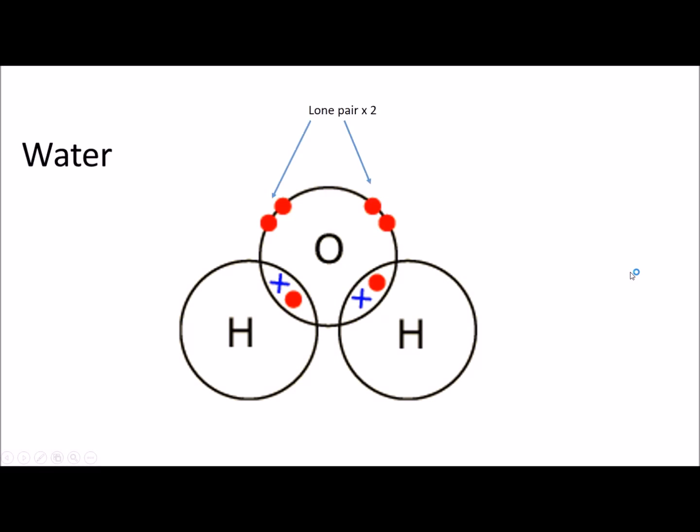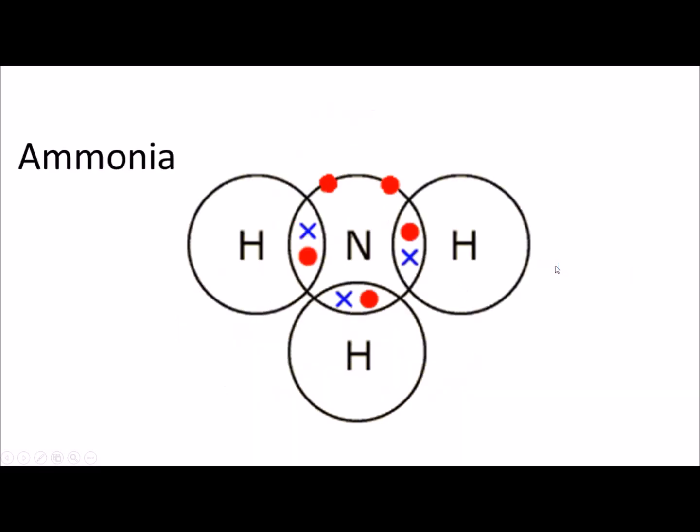The third example is ammonia or NH3. The central nitrogen atom is bonded to three hydrogen atoms and they share electrons to form a covalent bond. The nitrogen has only one lone pair.